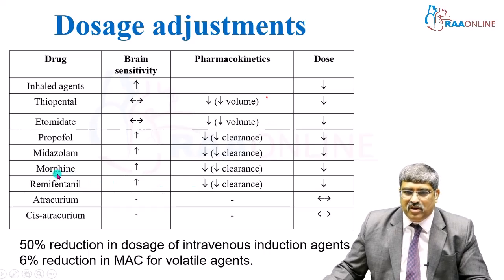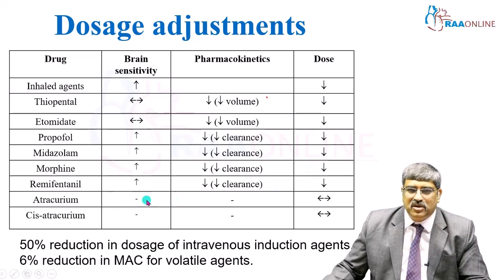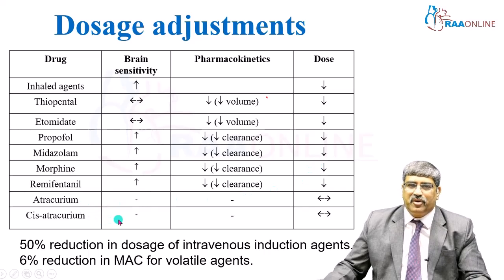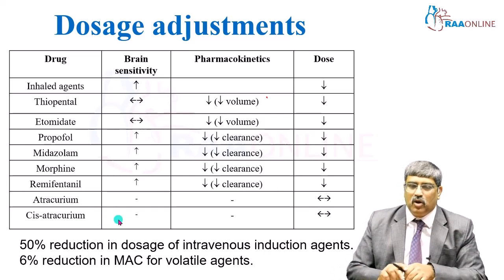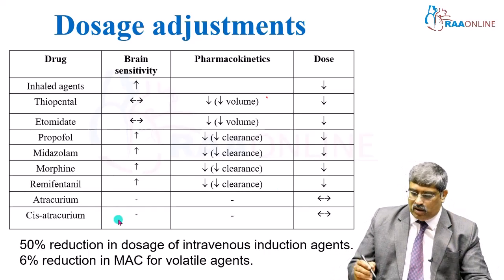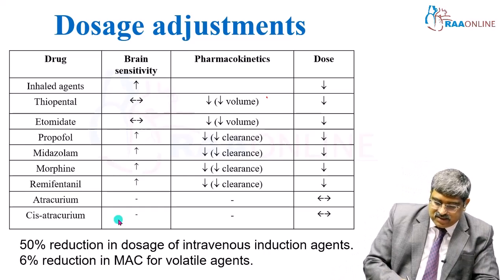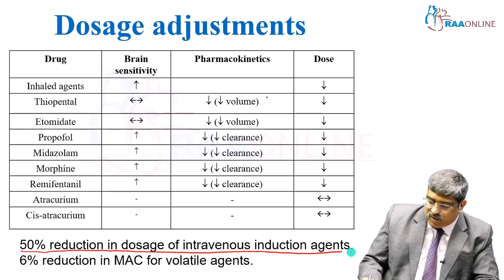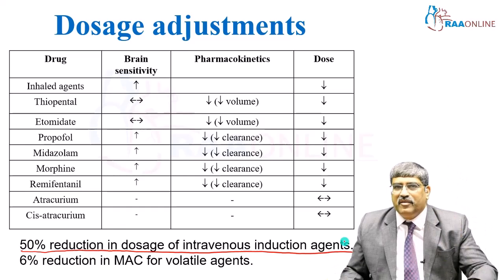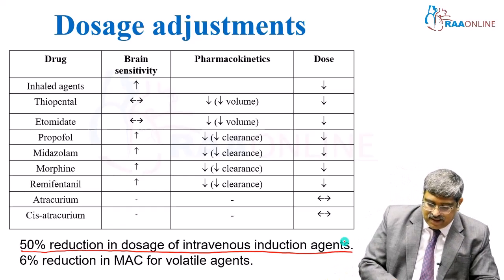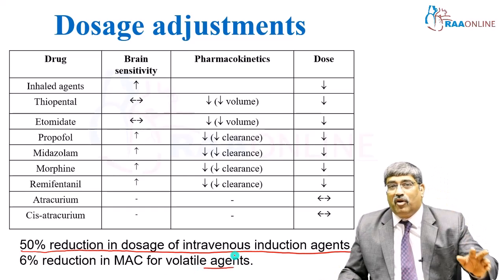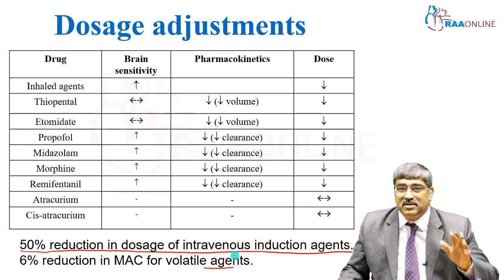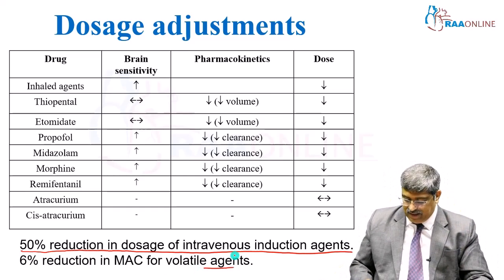With opioids, patients are very sensitive — try to reduce the dose. Atracurium and cisatracurium: there is not much change. Overall, there is a 50% reduction in dose of intravenous anesthetic agents and a 6% reduction in MAC for various inhalational agents.